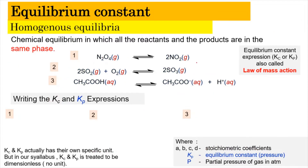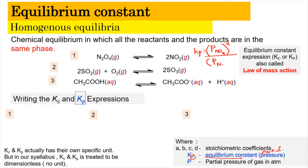Now we're going to look at the same equations again, but this time we need to learn how to write Kp. Kp is the equilibrium constant written in terms of partial pressure. For equation 1, Kp is the partial pressure of NO2 to the power of 2, divided by the partial pressure of N2O4 to the power of 1. The power of 1 is optional — you can write it or ignore it.